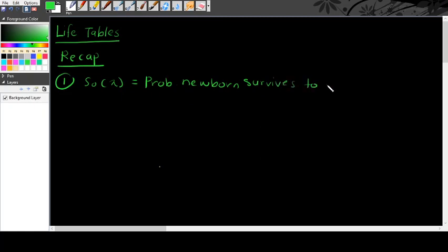Before we start, let's recap. We know that S0(x) is the probability of a newborn surviving to age x.